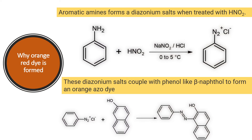Now you should be able to answer why the orange dye is obtained when a primary aromatic amine is present. A primary aromatic amine on treatment with NaNO₂ and HCl forms a diazonium salt. This diazonium salt couples with beta-naphthol to form an azo compound, which is orange-red in color.